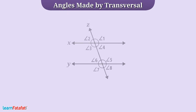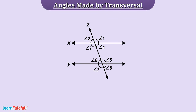Now, look at this figure. Here, line Z is intersecting line X and line Y at different points. That's why line Z is a transversal. Transversal Z forms eight different angles with these lines. Let's discuss them one by one.